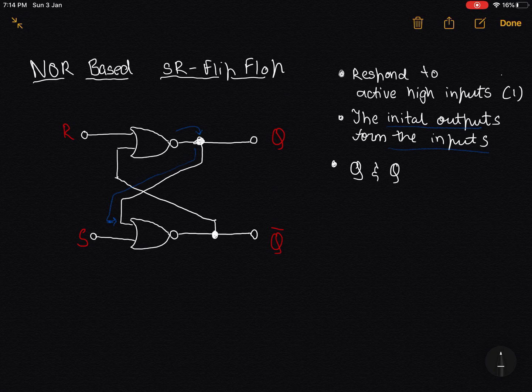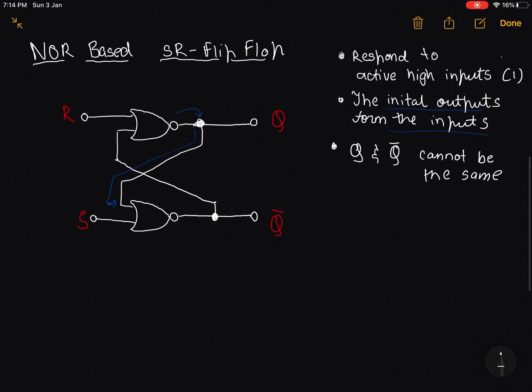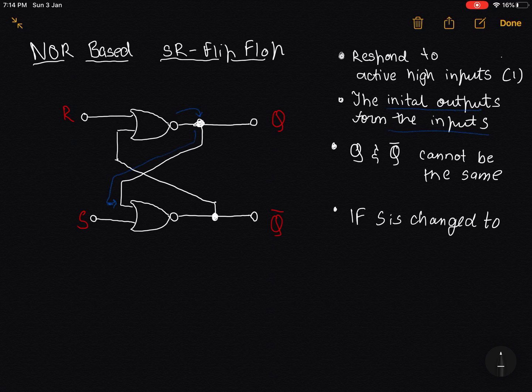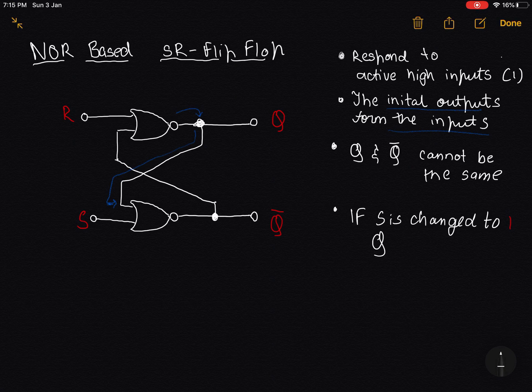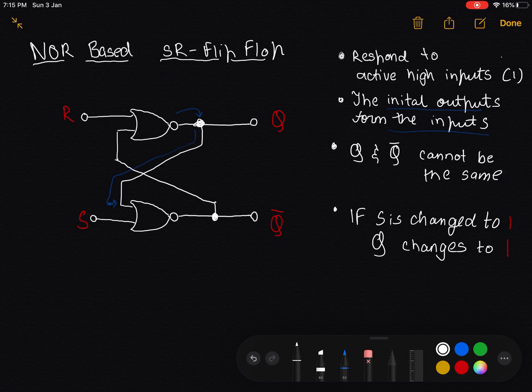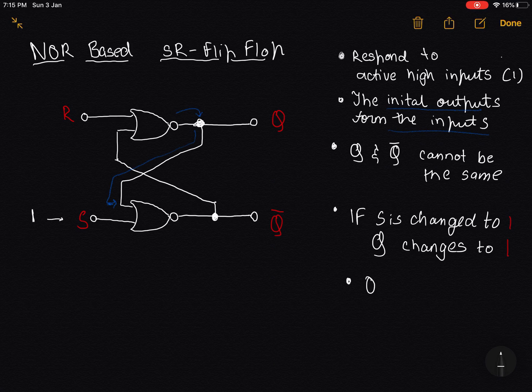Obviously, Q and Q complement cannot be the same. And in NOR-based SR flip-flops, if S is changed to 1, the Q changes to 1. 0 and 0 makes no change. This basically means if I set the input value of S to be 1, then in that case Q will also be 1.